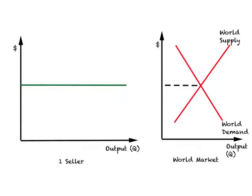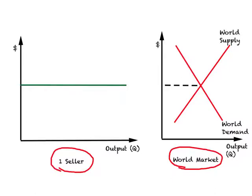Now look at the following diagram — note these diagrams are not drawn to scale. On one side we are looking at the world market, which is obviously very large, and the other diagram applies to just one seller or one firm. For any product, we have a world demand curve — downward sloping — and a world supply curve — upward sloping. Wherever these two curves intersect we have equilibrium, and at equilibrium the price of this good is determined. Let us call it P superscript E.